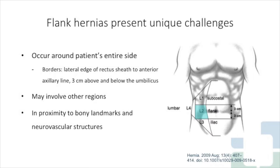The European Hernia Society defines flank hernias as defects occurring in the L2 region bounded medially by the lateral edge of the rectus sheath, laterally by the anterior axillary line, and craniocaudally by transverse lines 3 cm above and below the umbilicus. While this definition seems straightforward, flank hernias can involve other regions and may be in proximity to bony landmarks and neurovascular structures, which can create unique challenges.